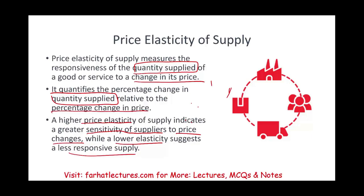Now we need to know why some suppliers can react quickly to price changes and others cannot. There are reasons for that — technically business reasons, resource reasons, limitation reasons, and input reasons. We'll look at those later. Next we're going to look at the formula, a few examples, and factors that affect price elasticity.